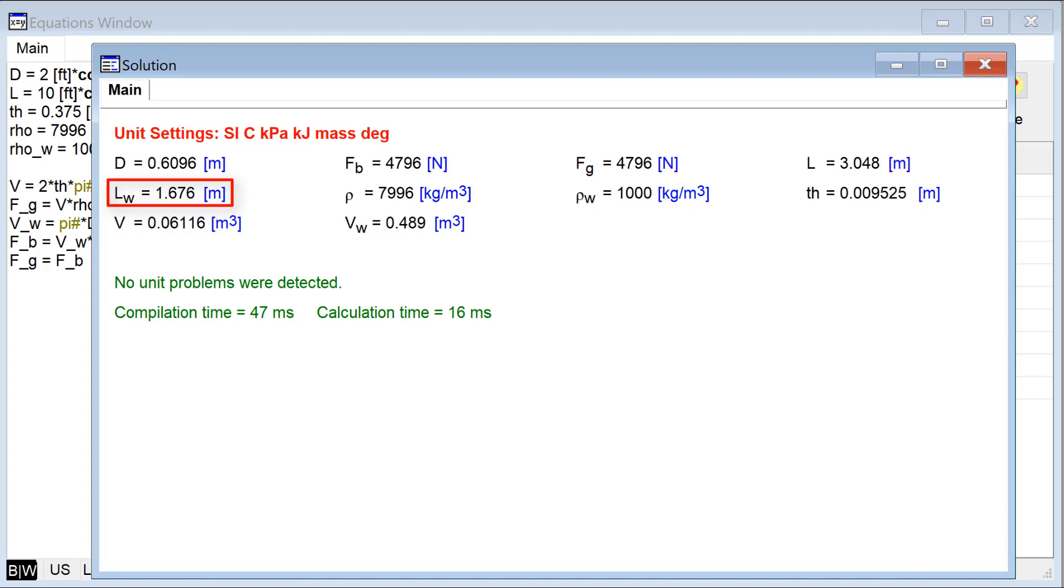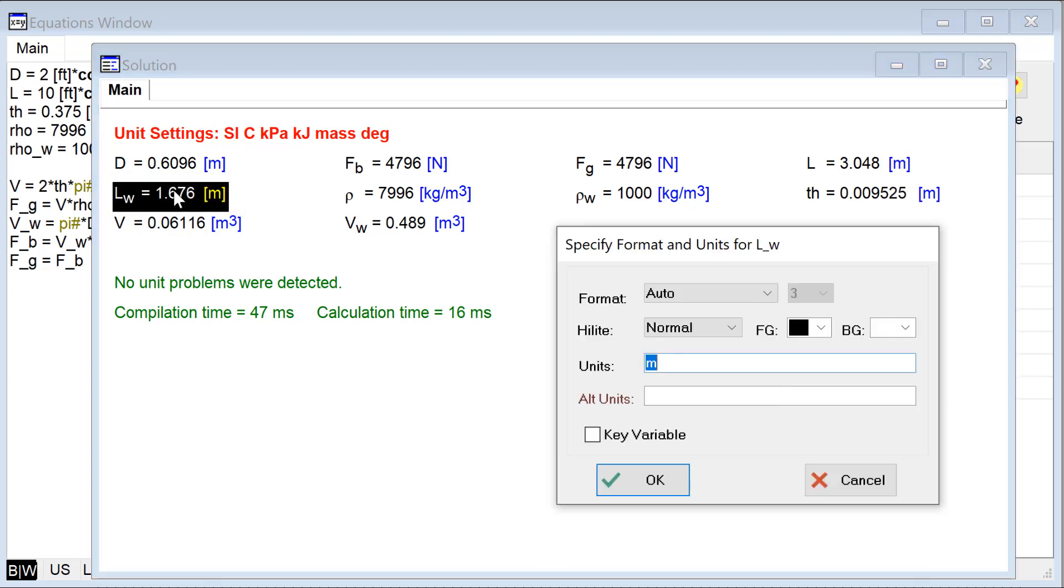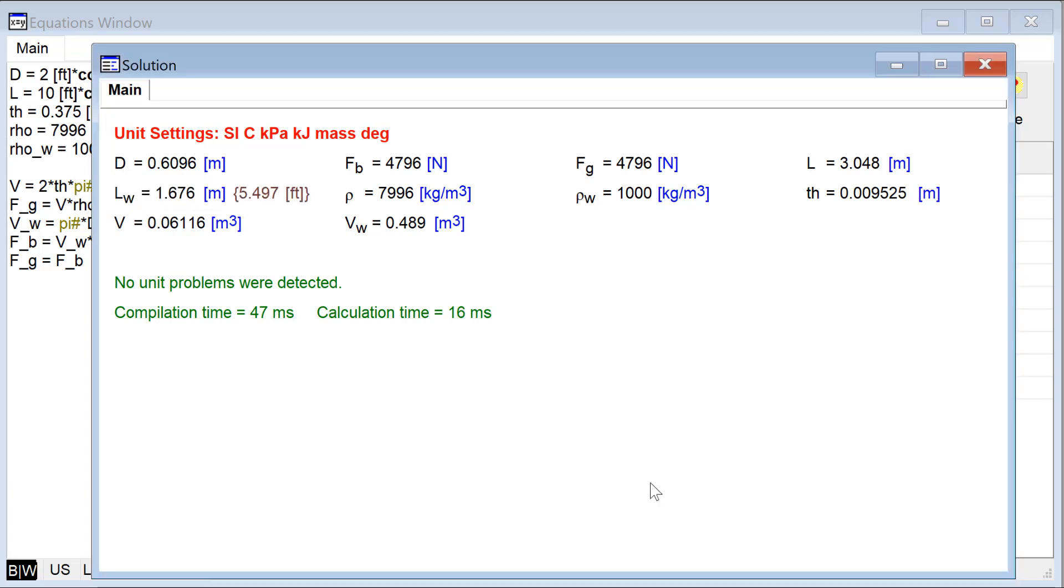If I want the answer in feet, it's as easy as using alternate units here and saying yeah, the primary units are meters, but the alternate units are feet. So hopefully this gets you pretty far down the road of using EES to solve real engineering problems that involve units and involve systems of equations that are not trivial.